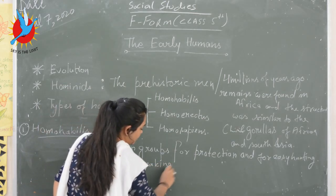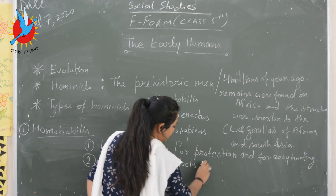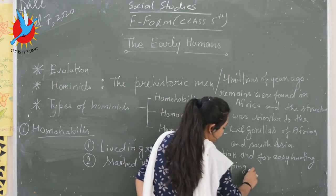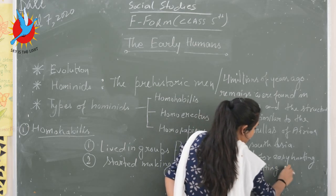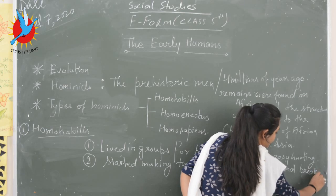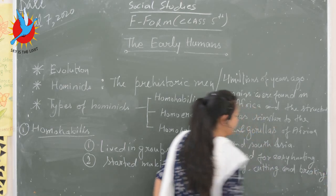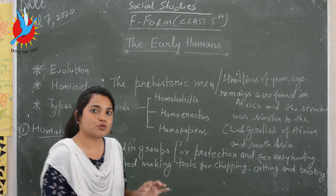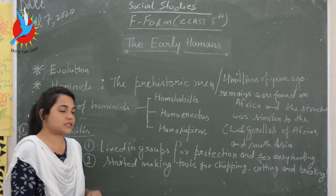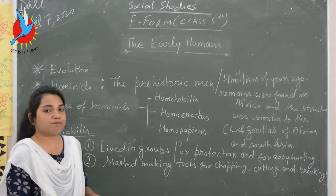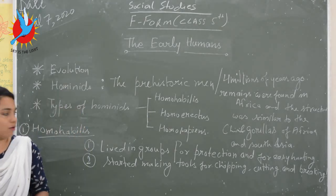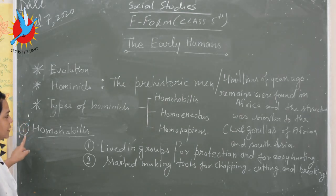The second important point about Homo Habilis is that they started making tools for chopping, cutting, and breaking. These tools were not very advanced, but with the passage of time, human species developed more modified versions of those tools.